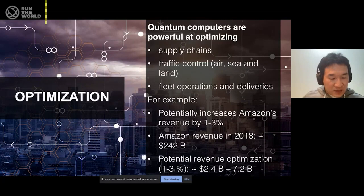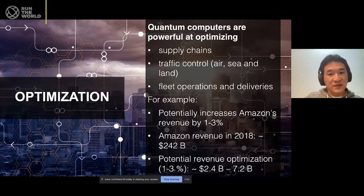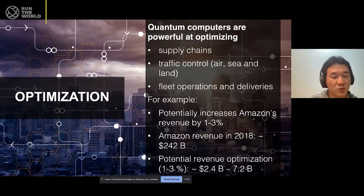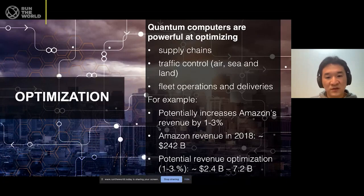The last three slides are dedicated to the three fields that quantum computers can help. Starting off with optimization — quantum computers are powerful at optimizing. For example, supply chains or traffic control — air, sea, and land — or fleet operations and deliveries. Potentially increasing Amazon's revenue by 1% to 3% through quantum optimization. Amazon's revenue in 2018 was roughly $242 billion, so saving 1% to 3% of that through optimization is a huge impact.